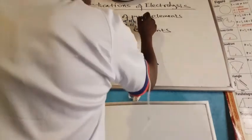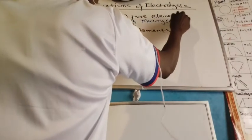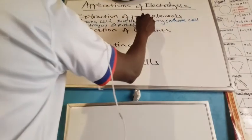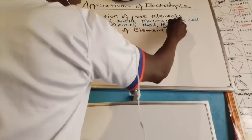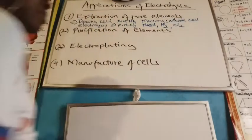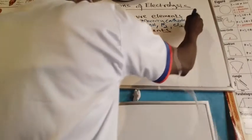In the mercury cathode cell, we extract pure sodium hydroxide, pure hydrogen gas, and pure chlorine. And if the need arises, we could also obtain pure mercury.